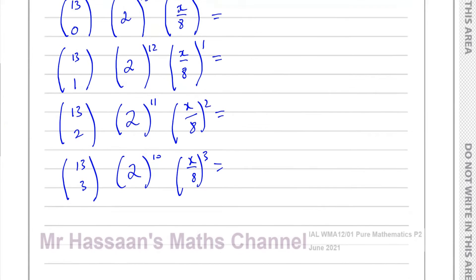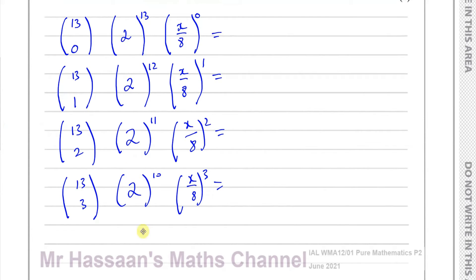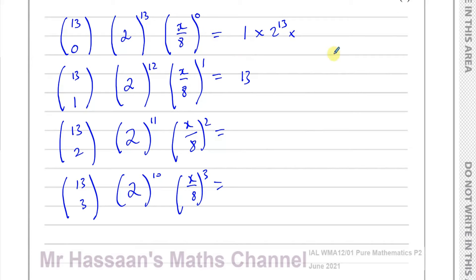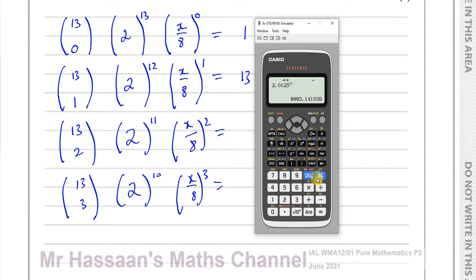Now let's find what these values are. For nCr, when you have 0 — like 13C0 — it will always give you 1, and 13C1 will always give you 13. So for the first term you have 1 times 2 to the power of 13, times x/8 to the power of 0, which is just 2 to the power of 13.